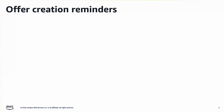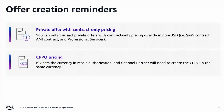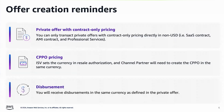If you want to learn more on how to create private offers in non-USD, please watch our next video that guides you through the offer creation process. Private offers require contract-only pricing — you can only transact private offers with contract-only pricing directly in non-USD, for example SaaS contract, AMI contract, and professional services. For CPPO pricing, the ISV sets the currency in the reseller authorization, and the channel partner will need to create a CPPO in the same currency. You will receive disbursements in the same currency as defined in the private offer.